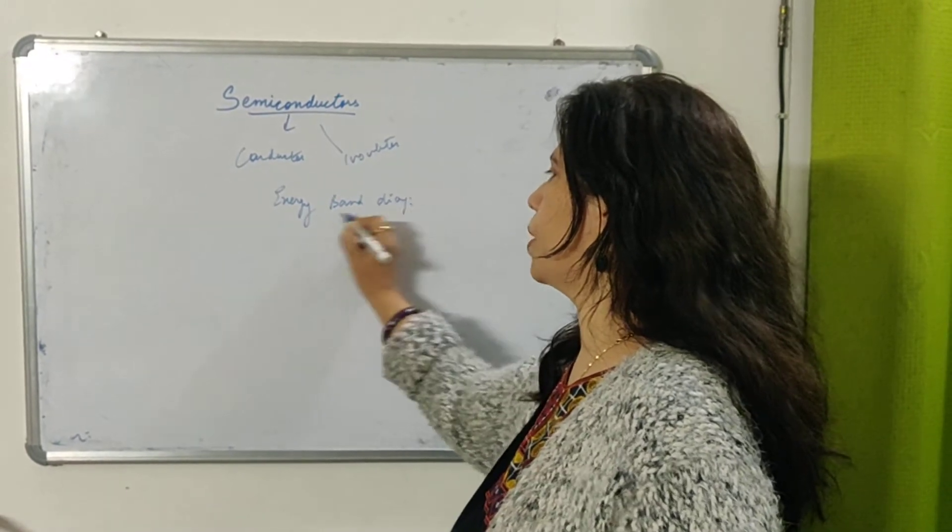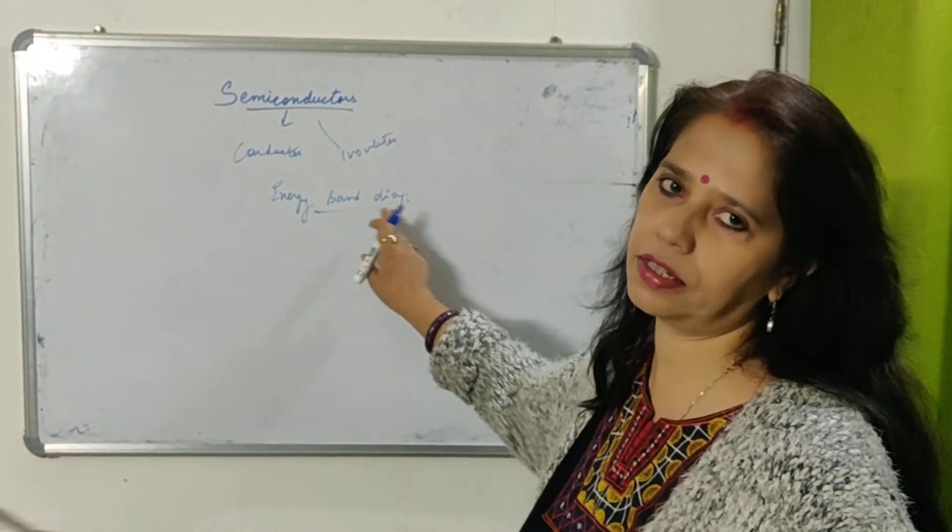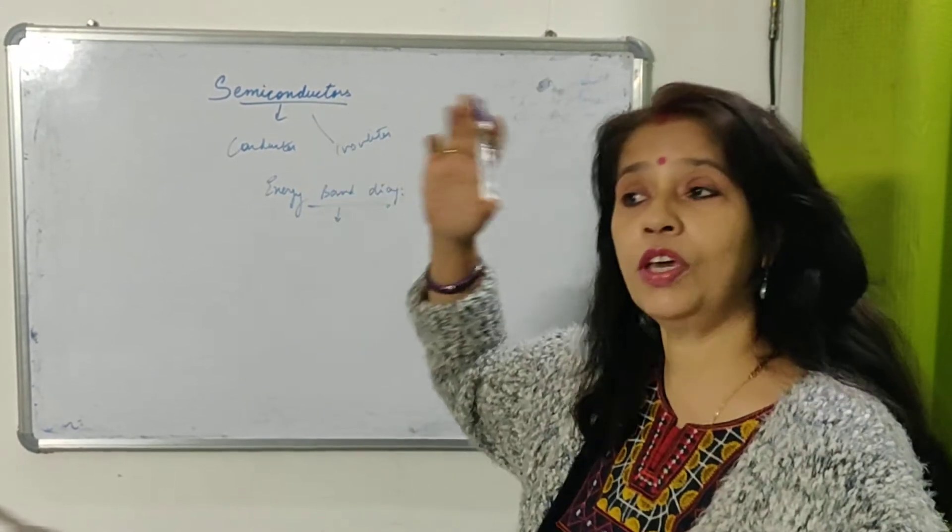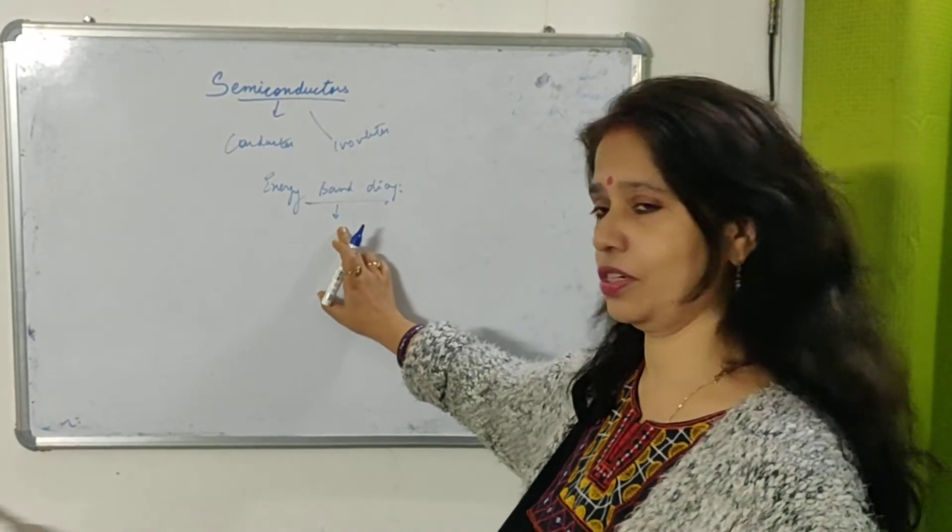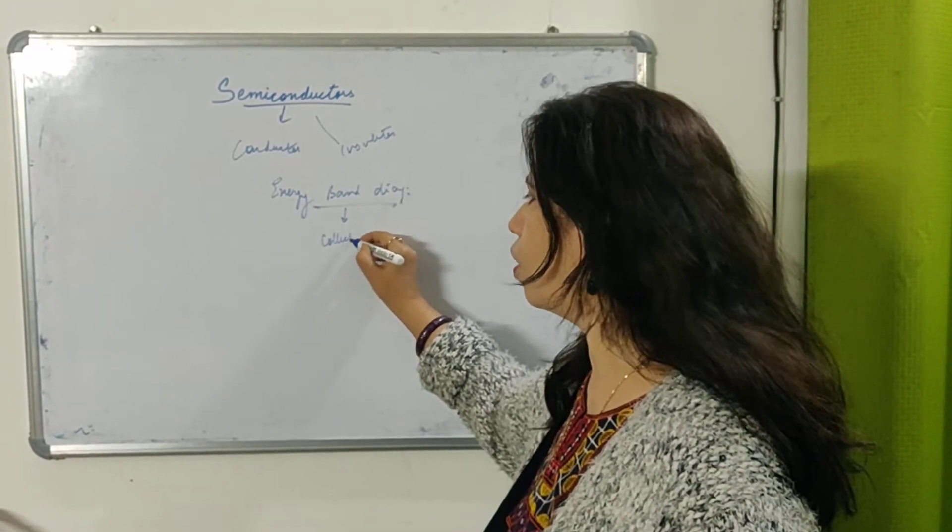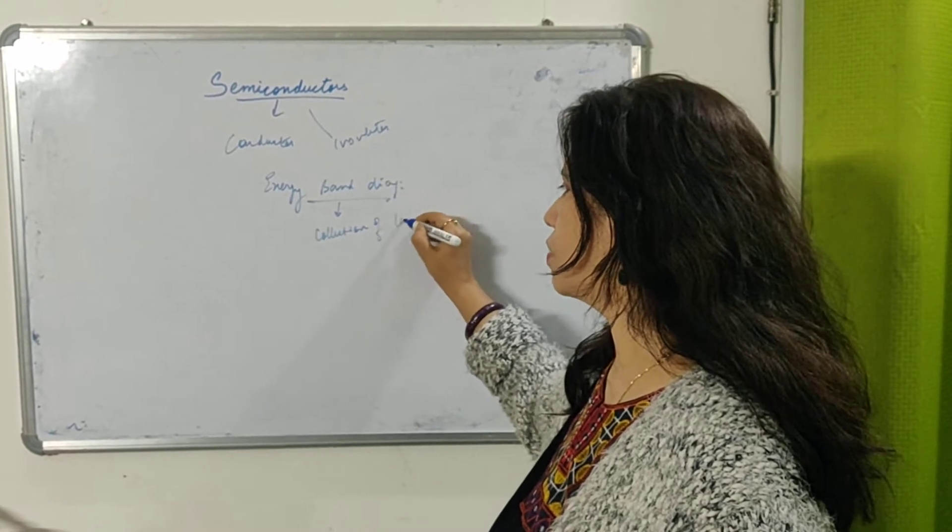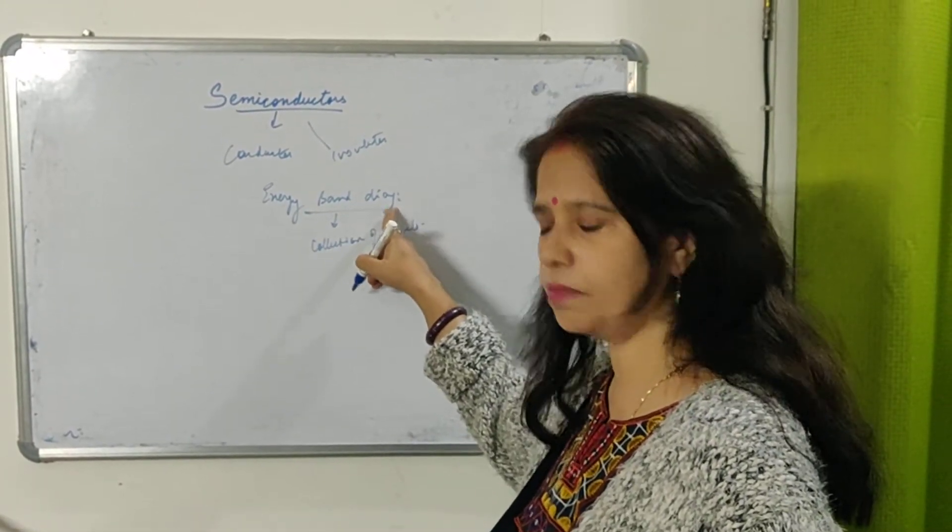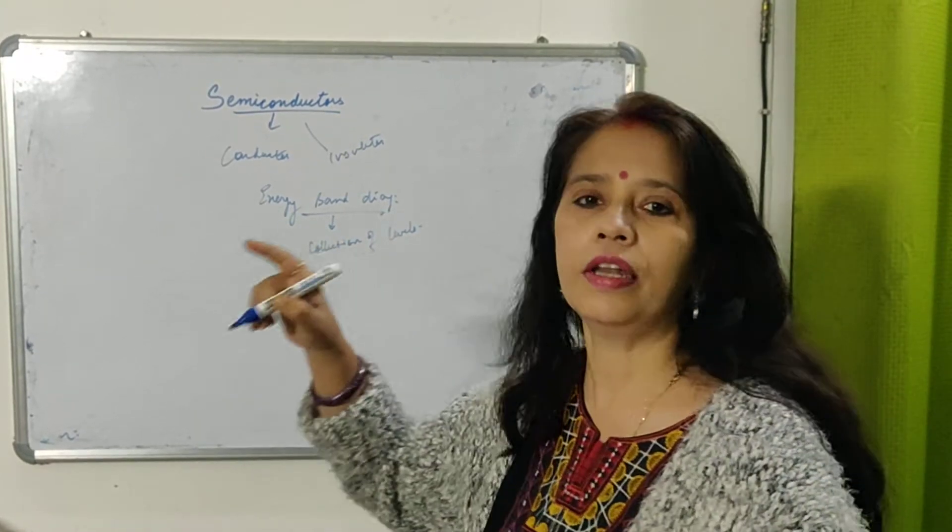So children, today's topic is basically energy band diagram. Now what does this band mean? In physics, we use maths as well as English. So band means a collection of levels. Here we are talking about energy band diagram, so collection of energy levels.